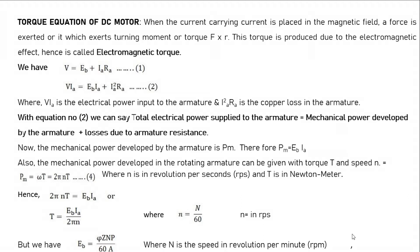When a current-carrying conductor is placed in the magnetic field, each conductor experiences a force. Since the force is acting tangentially on every conductor, torque is produced — force into radius equals torque. The torque produced due to electromagnetic effect is called electromagnetic torque.